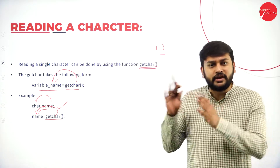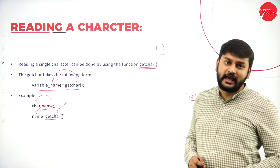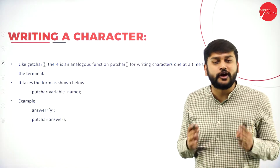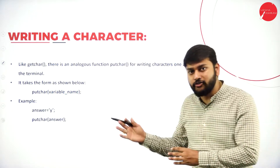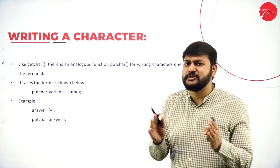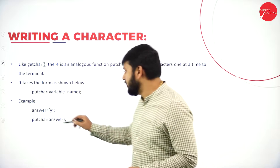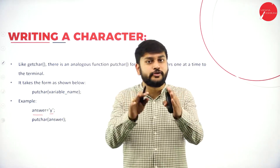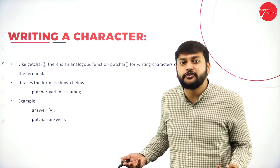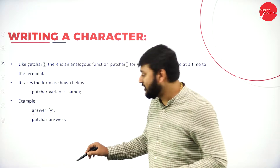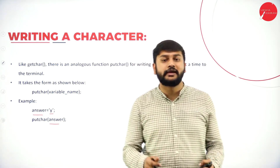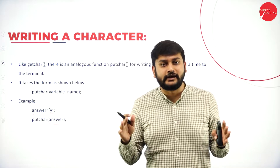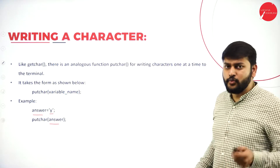The same thing happens in quite the opposite way if I want to display a character — that is, writing a character. For that, I use a function called putchar(). Where I was using getchar() for reading, here I will use putchar() for writing. The syntax is simple: imagine I have the character 'y' stored in a variable called 'answer'. I pass this 'answer' as a parameter to the putchar() function, and this will display the character on screen. You just have to remember getchar() as well as putchar().